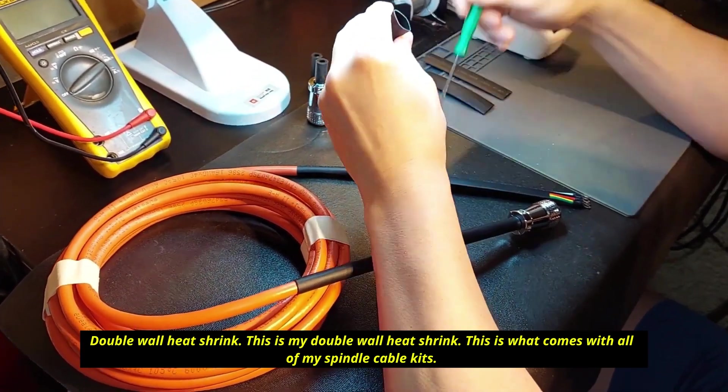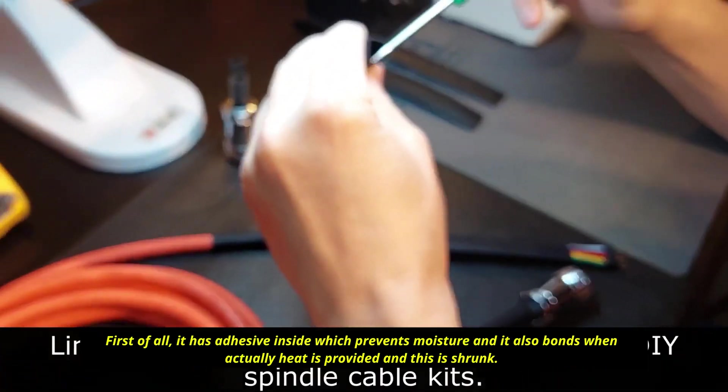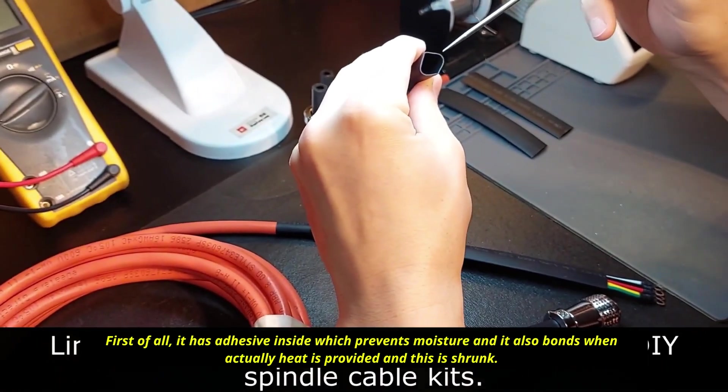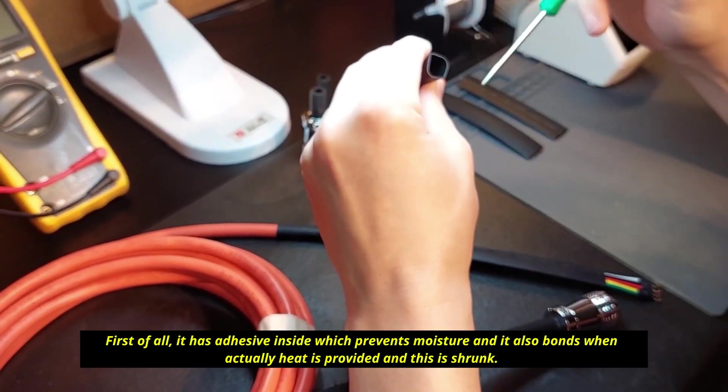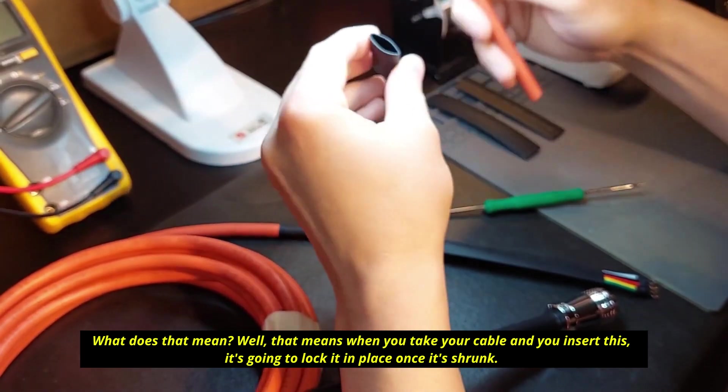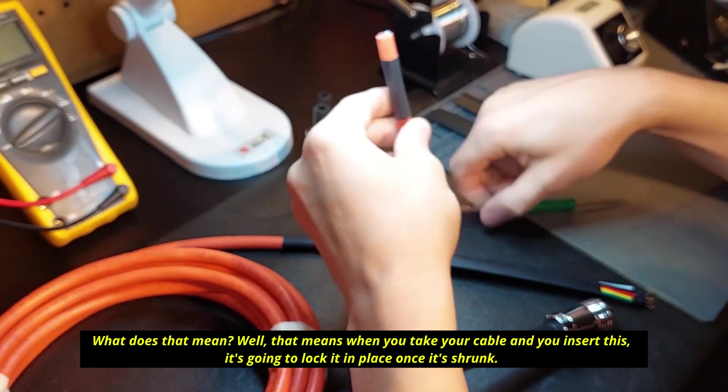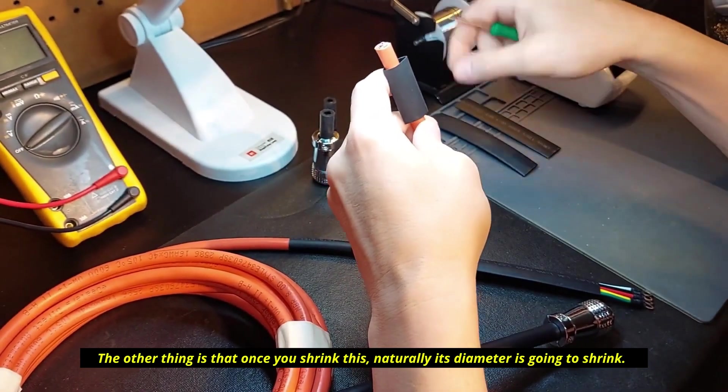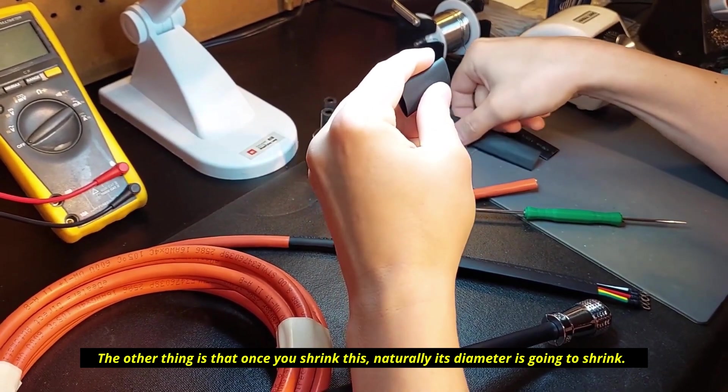Double wall heat shrink - this is what comes with all of my spindle cable kits. First of all it has adhesive inside which prevents moisture and it also bonds when heat is provided and this is shrunk. What does that mean? Well that means when you take your cable and you insert this, it's going to lock it in place once it's shrunk. The other thing is that once you shrink this naturally its diameter is going to shrink.